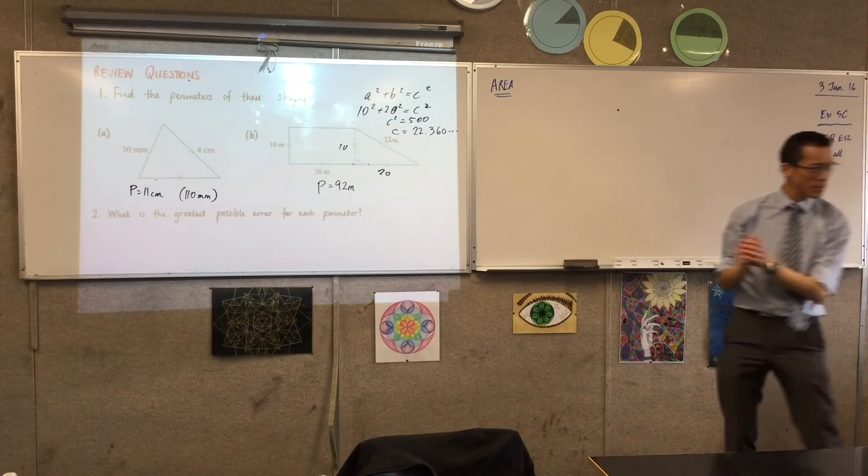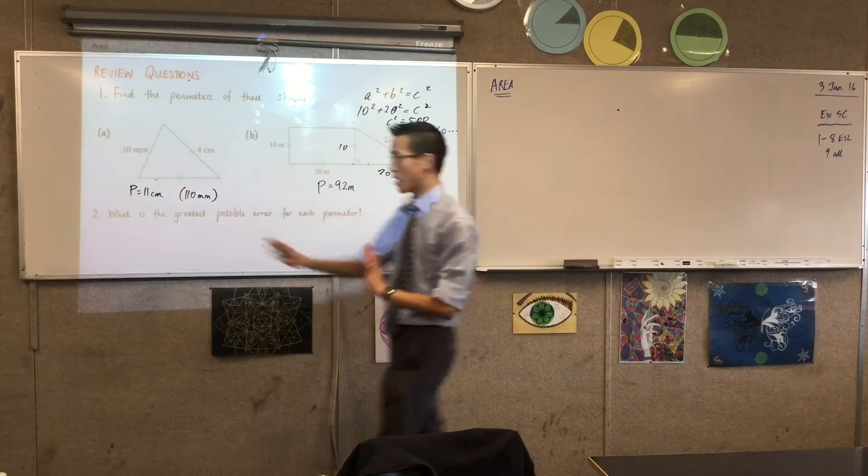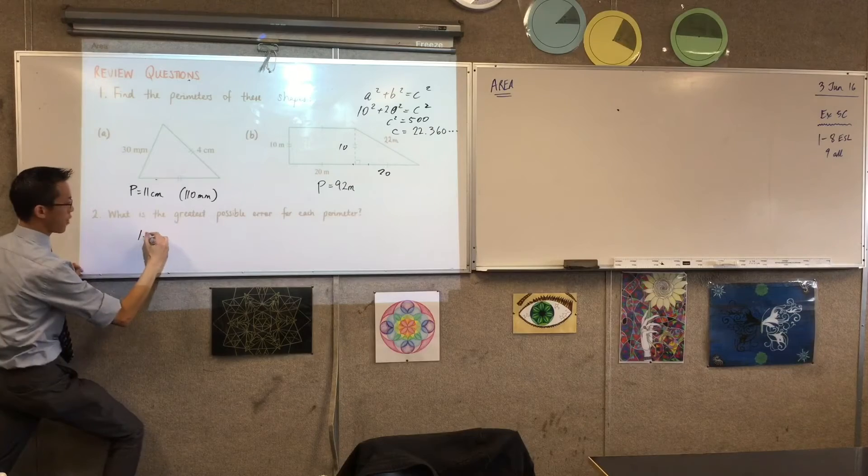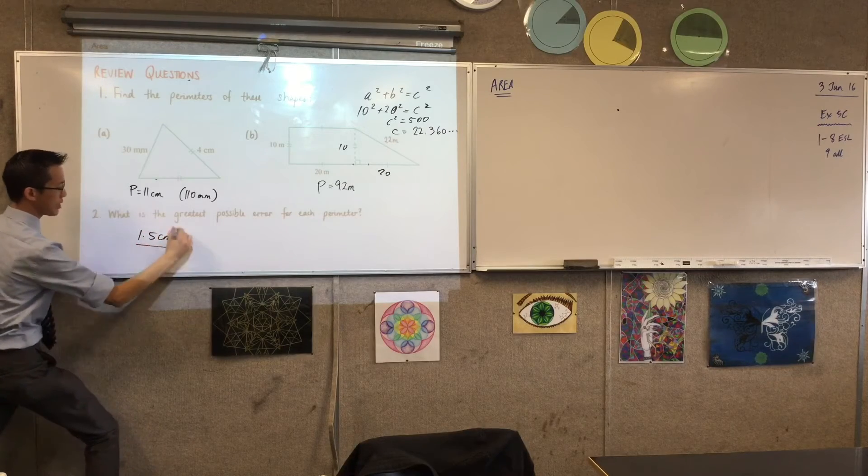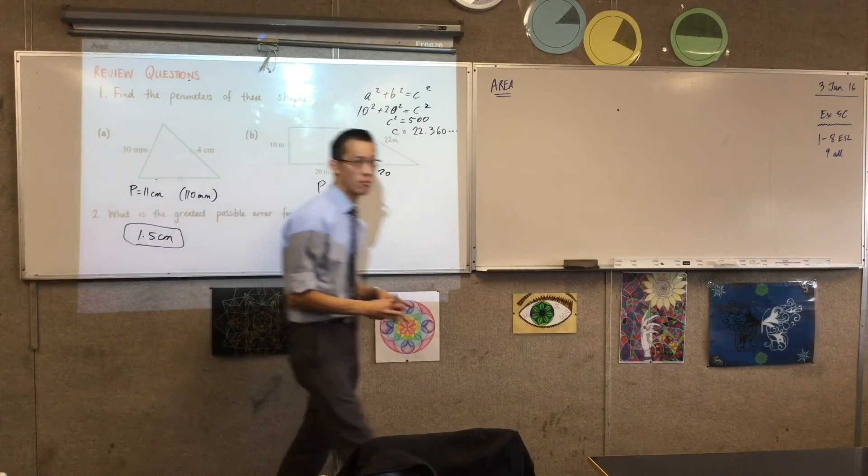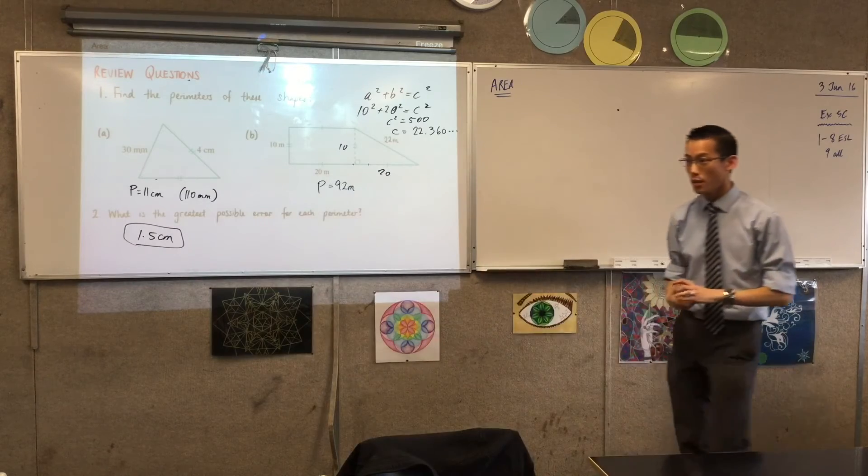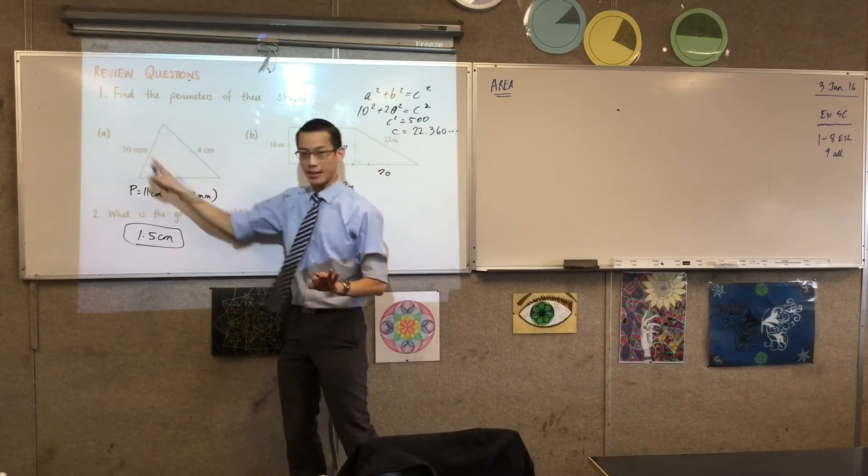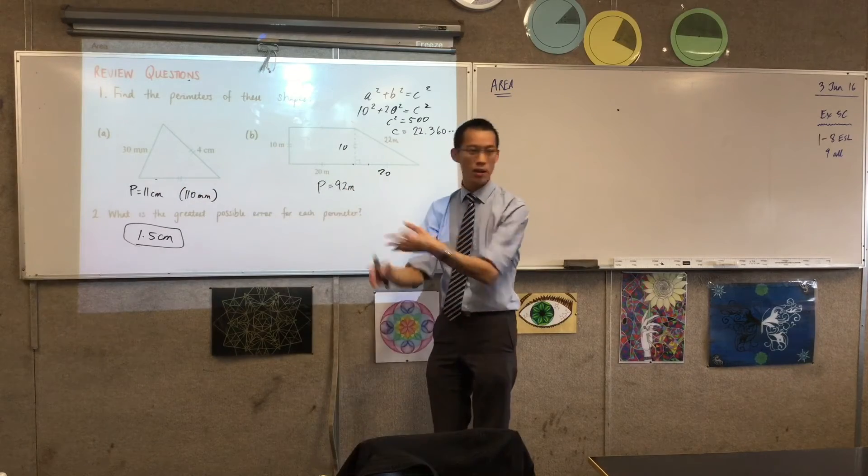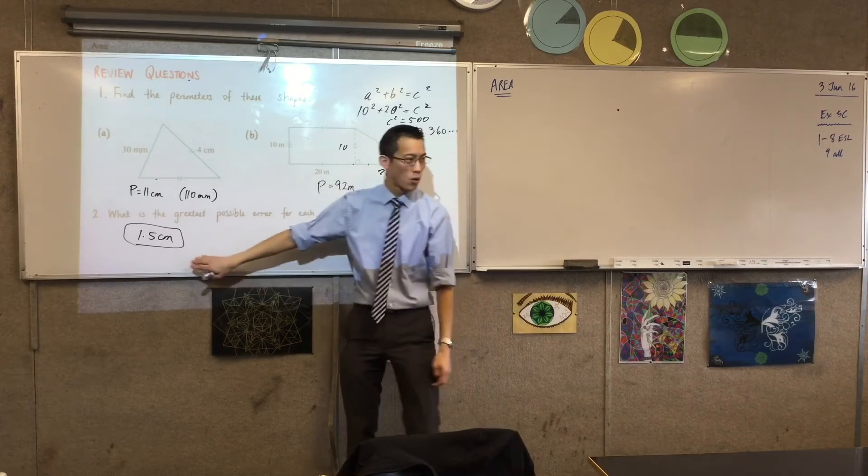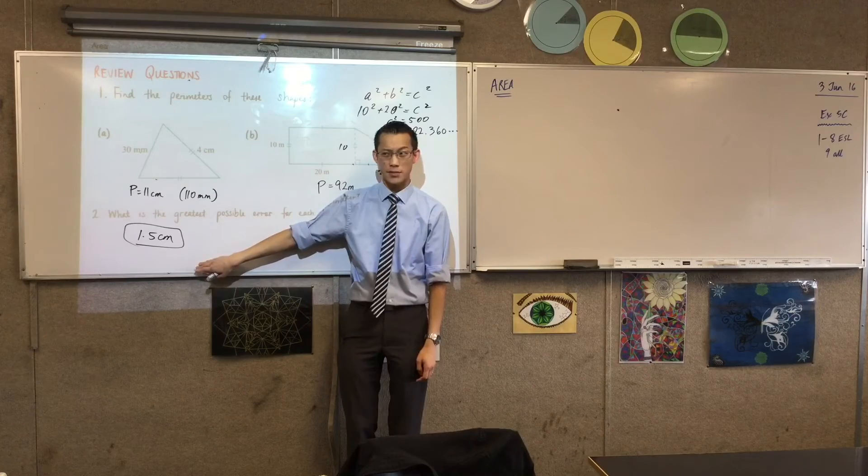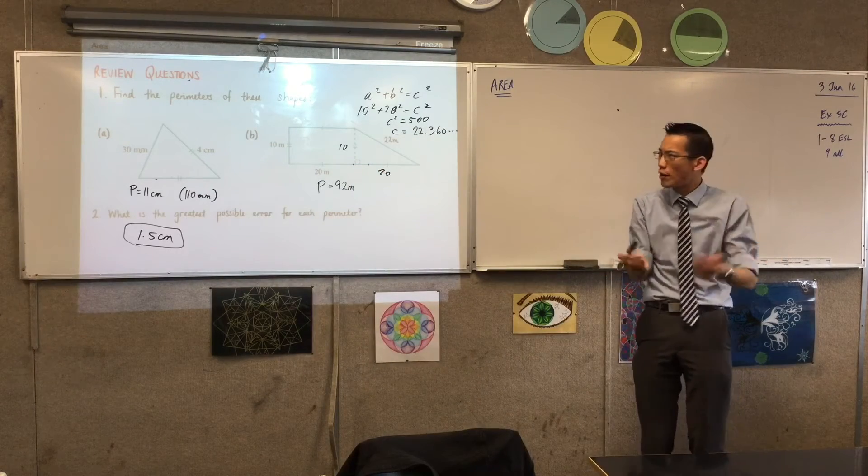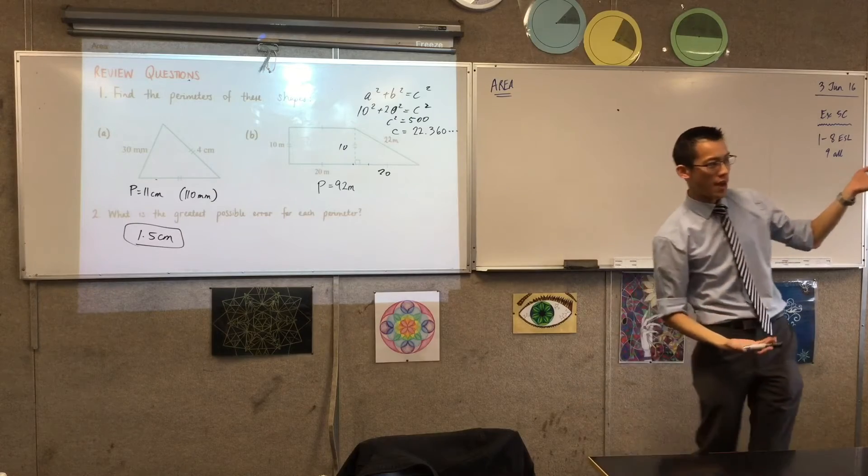Can we just answer this last bit? Greatest possible error. What did you have for this one? 1.5 centimeters. Can we dissect where does that number come from? Because there are three measurements. Number one, there are three measurements, three times we're taking this. So I'm going to work out my error and triple it. How did we know that the error was 0.5 centimeters for each one? Up or down. But why 0.5? Why not 0.1 or 0.05?